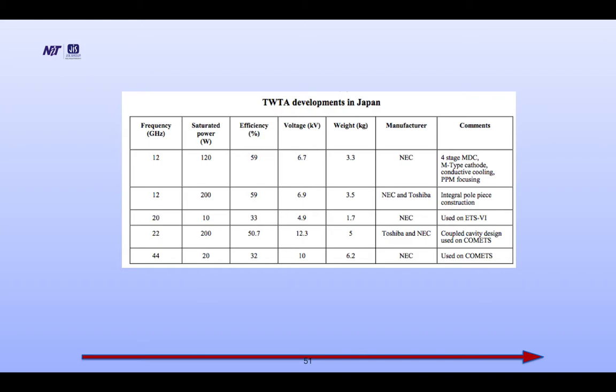For 20 GHz: power is 10 W, efficiency is 33%, voltage is 4.9 kV, weight is 1.7 kg, used on ETS V1. For 22 GHz: power is 200 W, efficiency is 50.7%, voltage is 12.3 kV, and weight is 5 kg — very lightweight. Manufacturer is Toshiba and Nippon Electronics Corporation with coupled active design, used on comets. For 44 GHz: saturated power is 20 W, efficiency is 32%, voltage is 10 kV, weight is 6.2 kg — manufactured by NEC, used on comets.